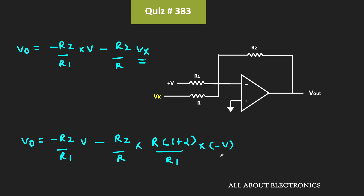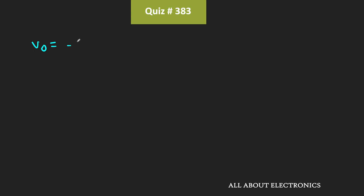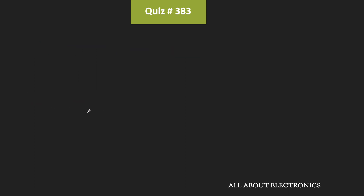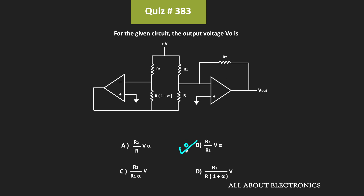The first op-amp is configured in the inverting configuration, and because of that we have a negative sign. So negative times negative becomes positive, and the R in the numerator and denominator cancel out. The output voltage Vout is equal to minus R2 divided by R1 times V plus R2 divided by R1 times (1 plus alpha) times V. If we further simplify, we get Vout equal to R2 divided by R1 times alpha times V. This is the output voltage of the given circuit, and therefore option B is the correct answer.